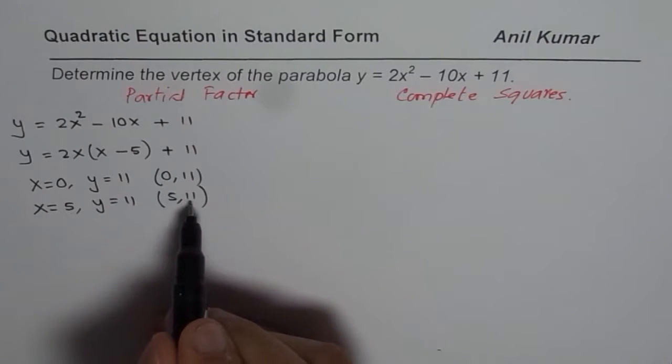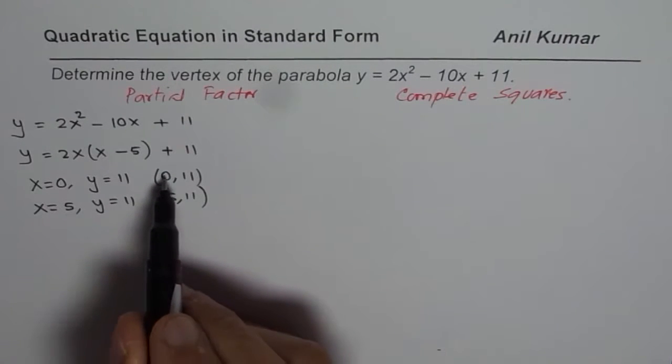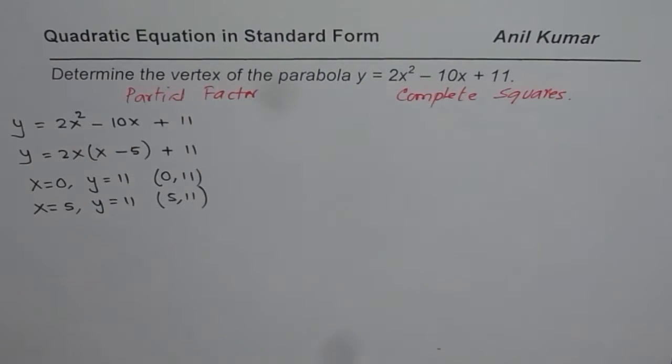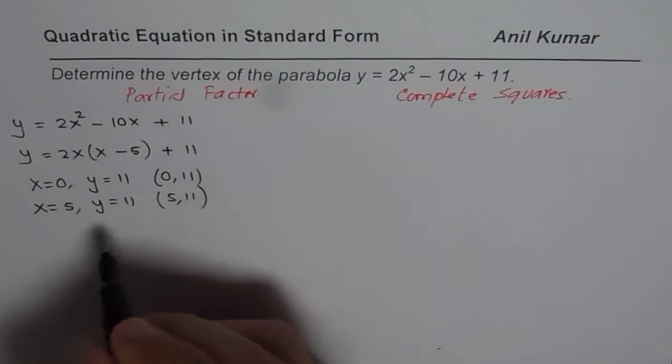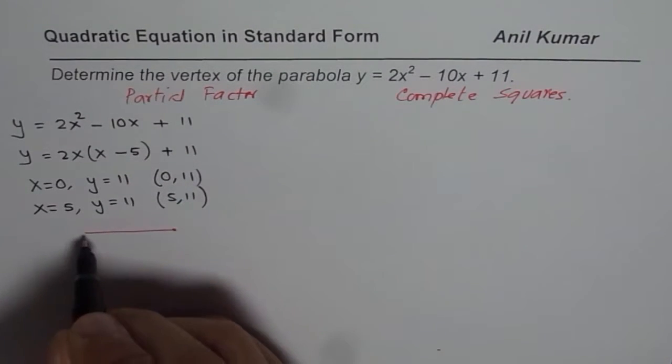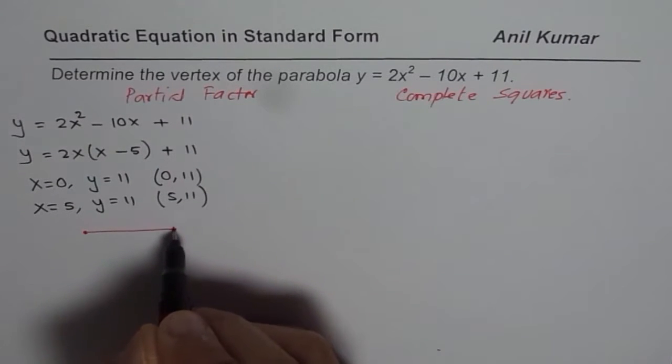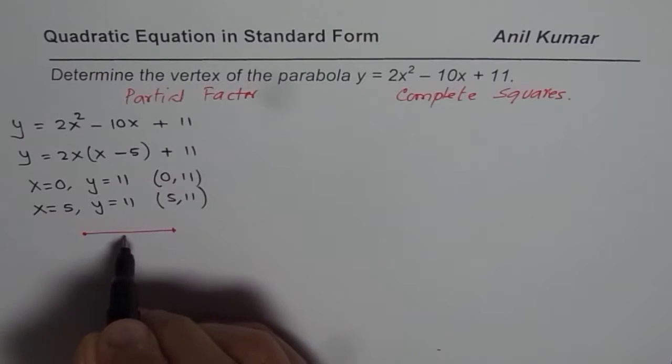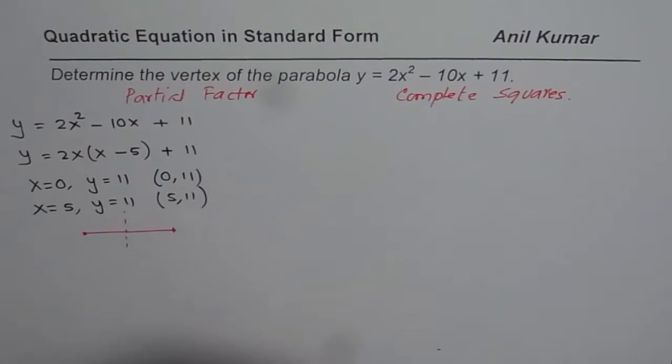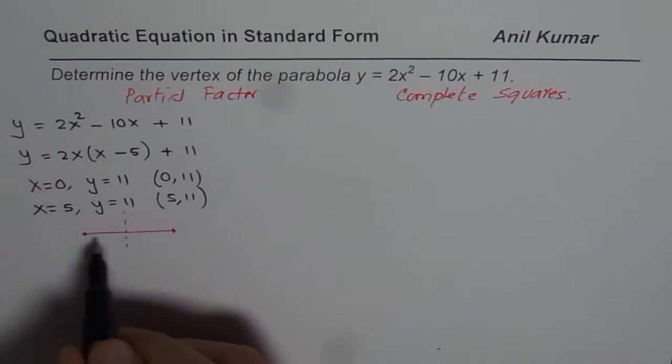Now since the y coordinates are the same, that means this is a horizontal line where we have y-intercept and this is another point on the parabola. The axis will be right in the center of this, so we can always find the axis.